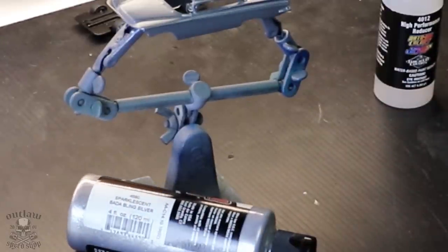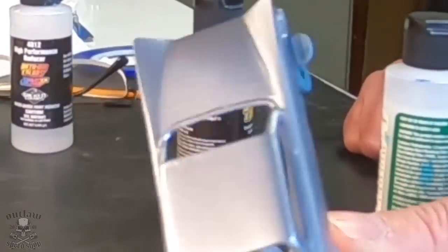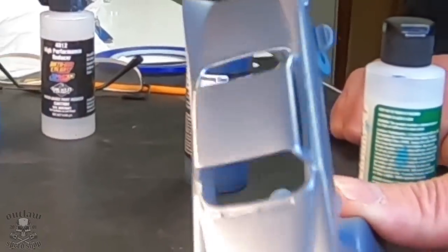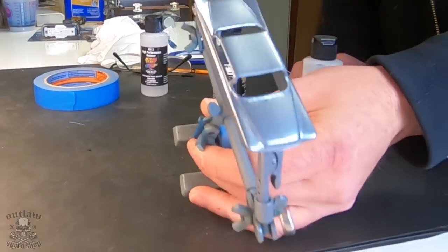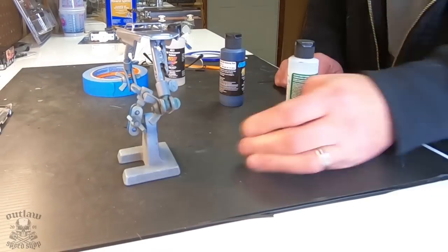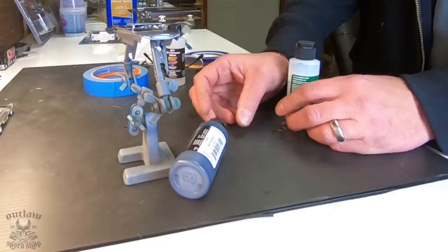I get the Sparkalescent Silver, which I put on, and this stuff is awesome. It's got a really nice metal flake to it. And I thought that would be perfect because that's what I want for the roof, and it would be a great base for the candy blue I'm going to apply over. And again, it worked out okay. I'm just not 100% happy.